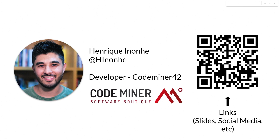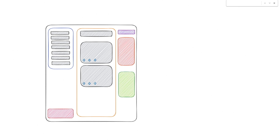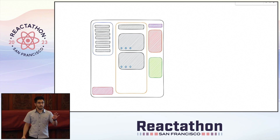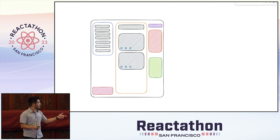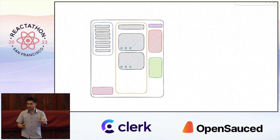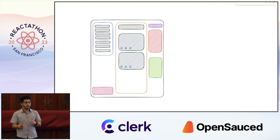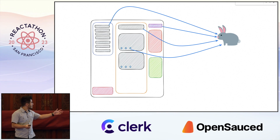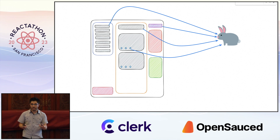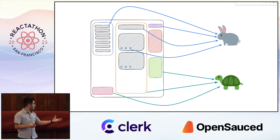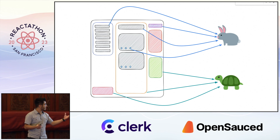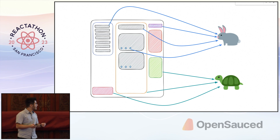I'll be talking about concurrent React. So, we'll start by drawing our attention to user interfaces. User interfaces are composed of many different parts. Some parts are very fast in terms of how quick they respond to user interactions, while others can be quite slow and may take a considerable amount of time to update.